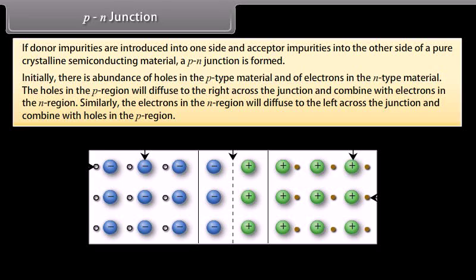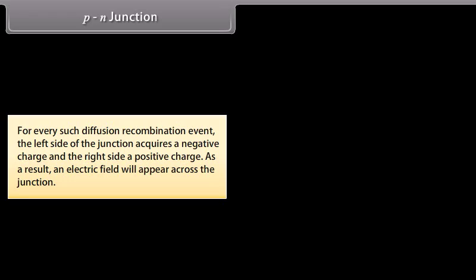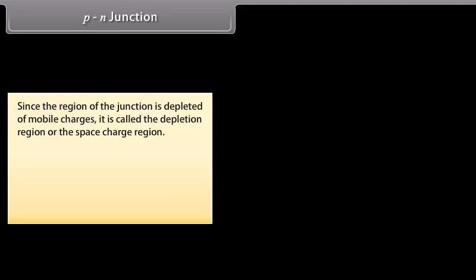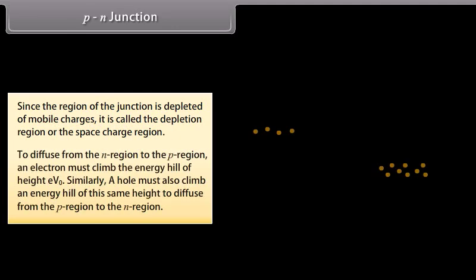Similarly, the electrons in the N-region diffuse to the left across the junction and combine with the holes in the P-region. For every such diffusion recombination event, the left side of the junction acquires a negative charge and the right side a positive charge. As a result, an electric field appears across the junction. Since the region of the junction is depleted of mobile charges, it is called the depletion region or the space charge region. To diffuse from the N-region to the P-region, an electron must climb the energy hill of height eV₀, as must a hole diffusing in the opposite direction.